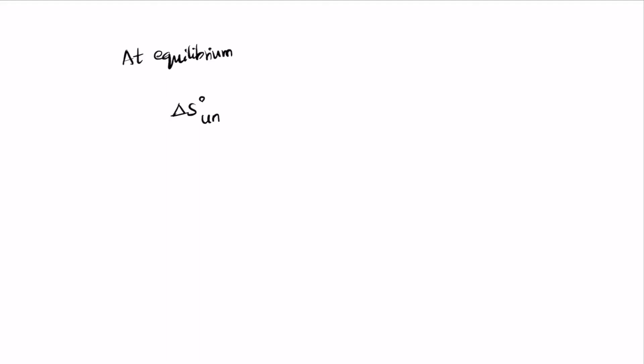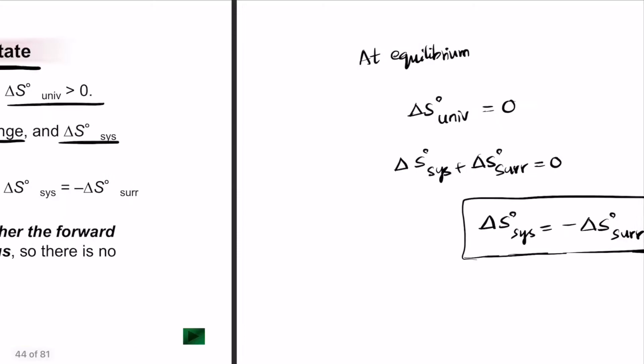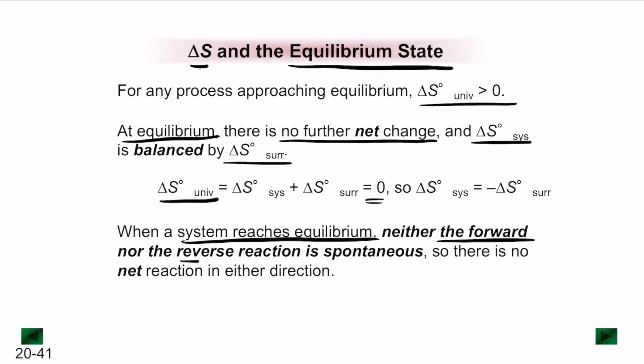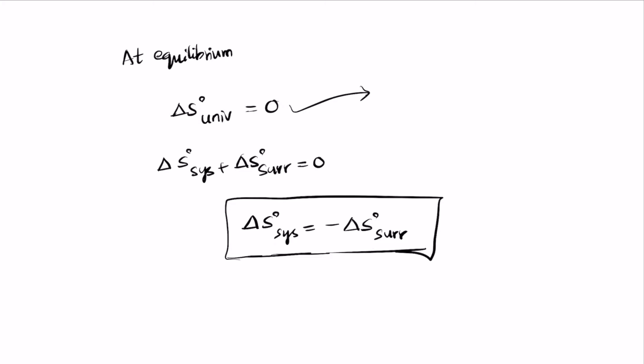At equilibrium, delta S of the system plus delta S of the surroundings equals 0, which means delta S of the system equals negative delta S of the surroundings. When a system reaches equilibrium, neither the forward nor the reverse reaction is spontaneous — there is no net reaction in either direction. This is the idea behind delta S of the universe becoming equal to 0.